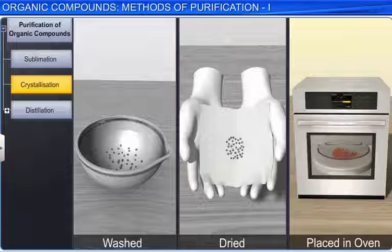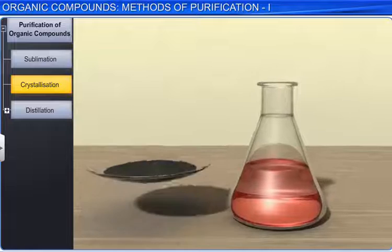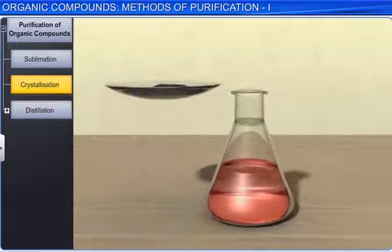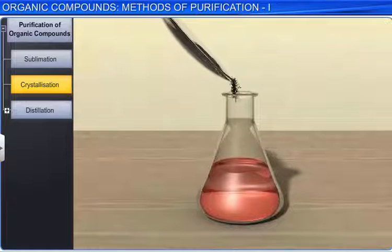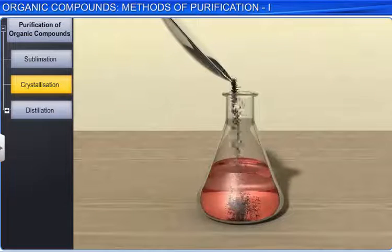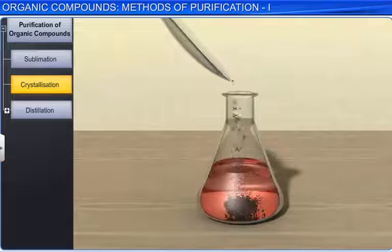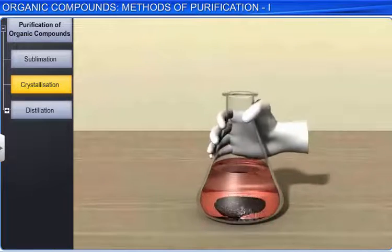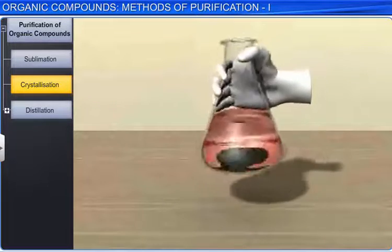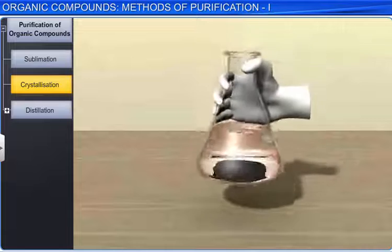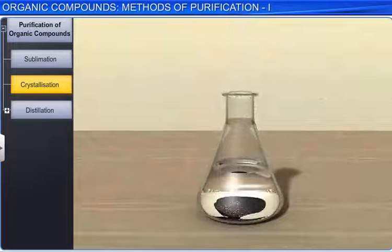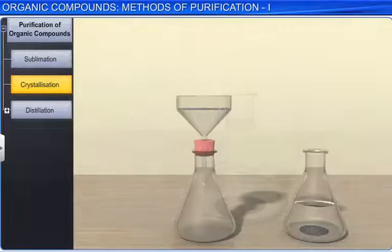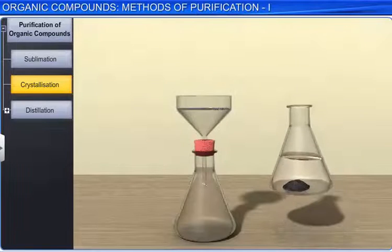Sometimes impurities impart color to the solution. To remove such impurities, the filtrate is passed through activated charcoal. The charcoal adsorbs the impurities. The solution is then filtered and re-crystallized as described above.